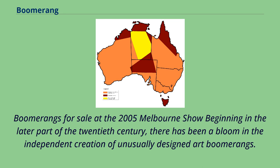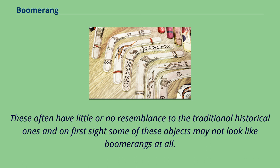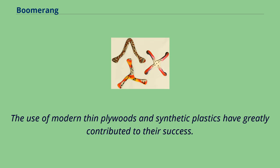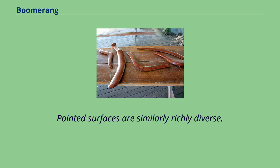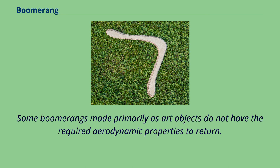Beginning in the later part of the 20th century, there has been a bloom in the independent creation of unusually designed art boomerangs. These often have little or no resemblance to traditional historical ones, and on first sight some may not look like boomerangs at all. Modern thin plywoods and synthetic plastics have greatly contributed to their success. Designs are very diverse and can range from animal-inspired forms, humorous themes, complex calligraphic and symbolic shapes, to the purely abstract. Painted surfaces are similarly richly diverse. Some boomerangs made primarily as art objects do not have the required aerodynamic properties to return.